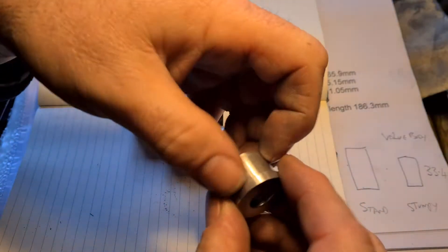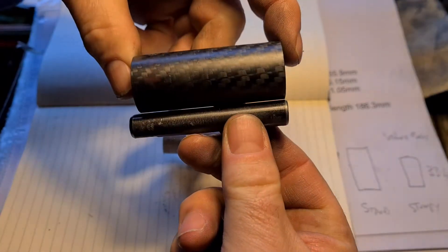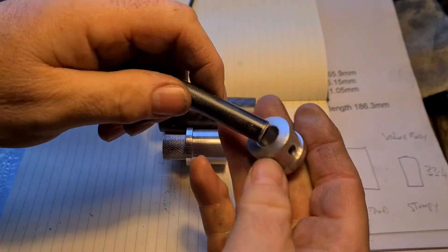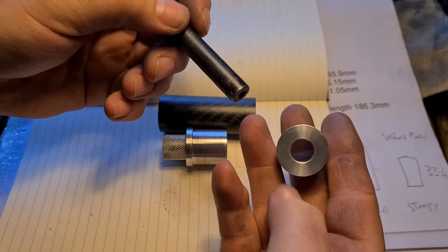Now the idea is, obviously this is just the shortest barrel in history, this is just a demo. So this would be your barrel, then you would slide on your end cap.